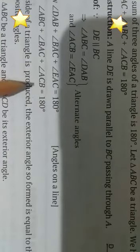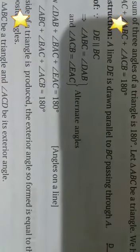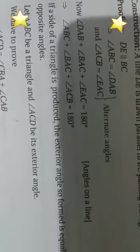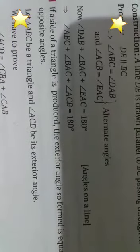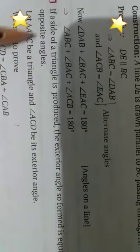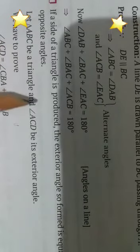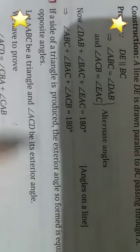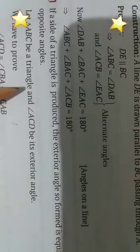Now another property, which we will use while solving problems: if a side of a triangle is produced, the exterior angle so formed is equal to the sum of the two interior opposite angles.